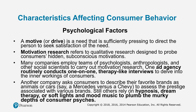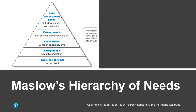Other companies ask consumers to describe their favorite brands as animals or cars — such as Mercedes versus a Chevy. Others use hypnosis, dream therapy, and a lot of different murky depths of the consumer psyche. All these psychological factors really do impact buying behavior. One of the most interesting ways of understanding people's needs is Maslow's Hierarchy of Needs — useful not just in marketing but in understanding people as a whole. Where you are in the buying decision process is usually associated with where you are in Maslow's hierarchy of needs.